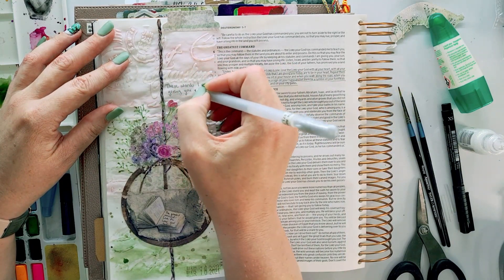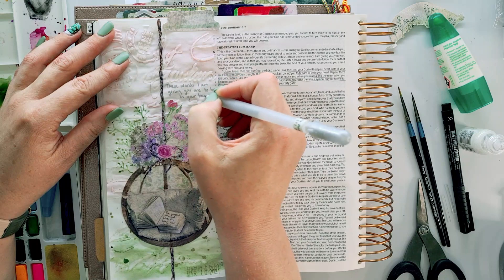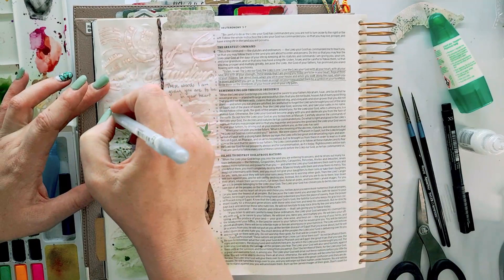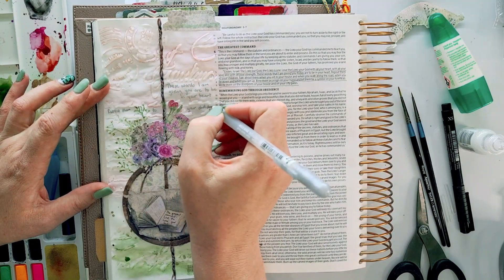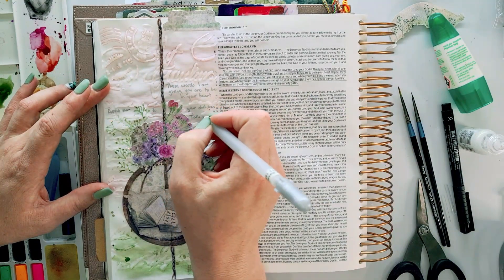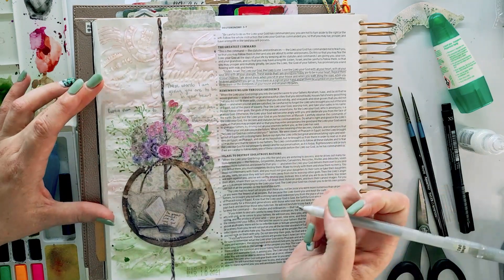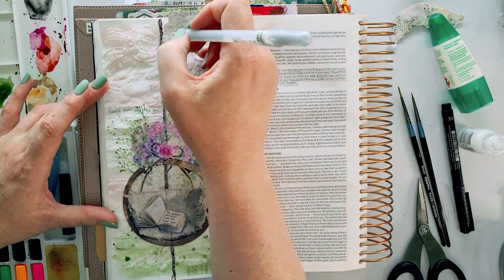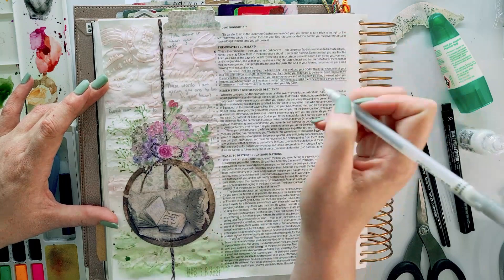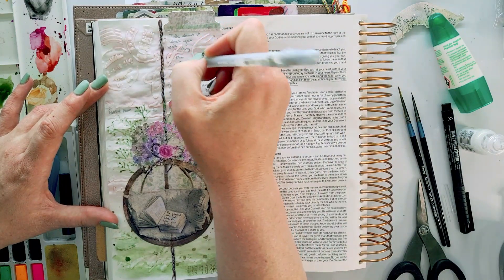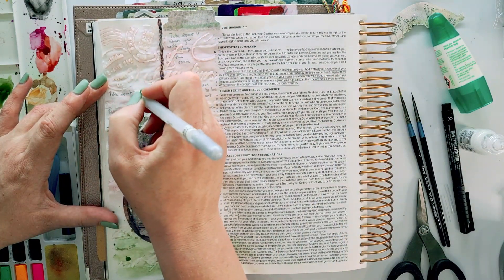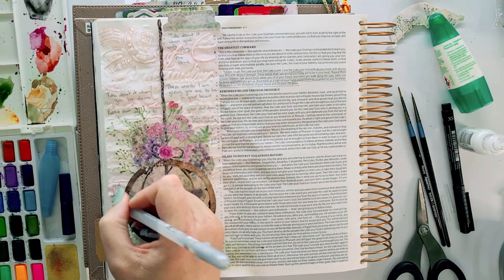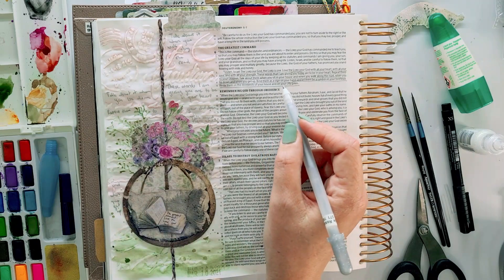Then taking my silver gel pen—this is a Sakura Jelly Roll pen—and I'm writing the words of this verse in random places in between the background. The reason why I chose the silver is because I wanted it to really blend into the background. I don't want it to be the focus point. I want it to be a part of the background and very soft and gentle and not visible unless you actually go look for it. So it came out exactly the way I was hoping it would, and that just always makes me happy.